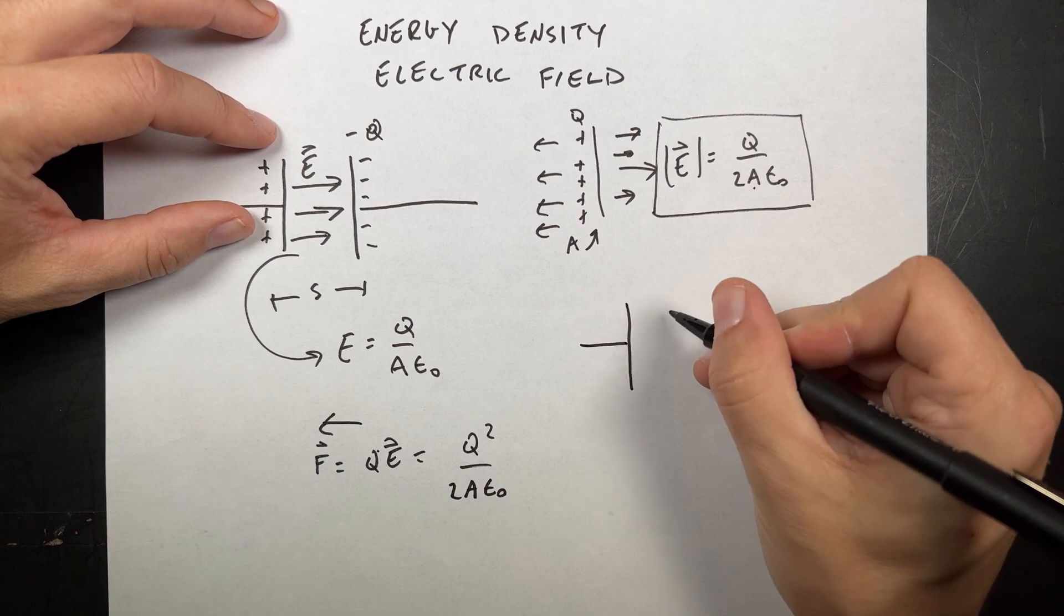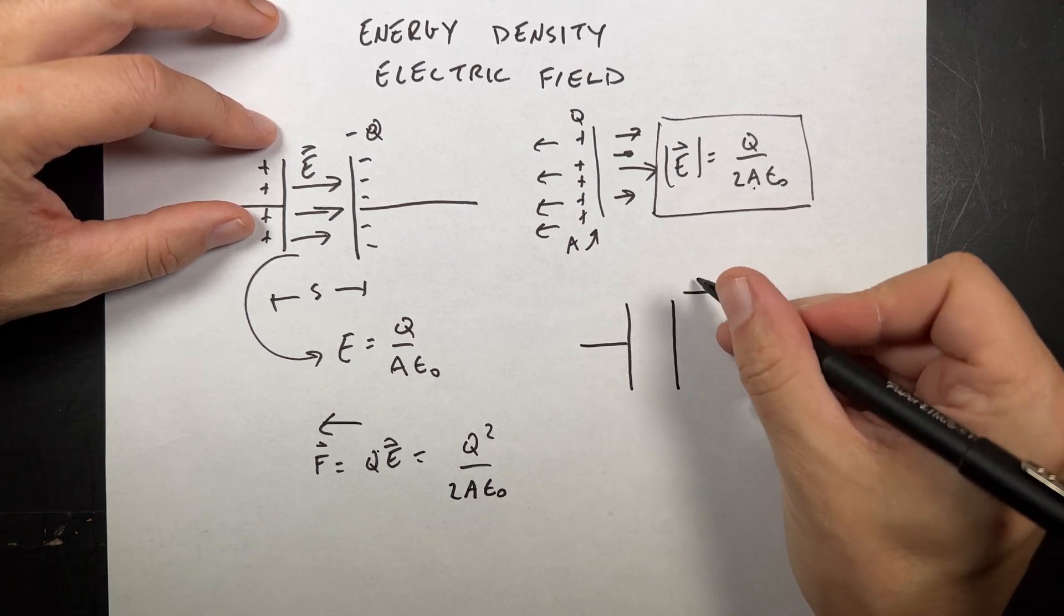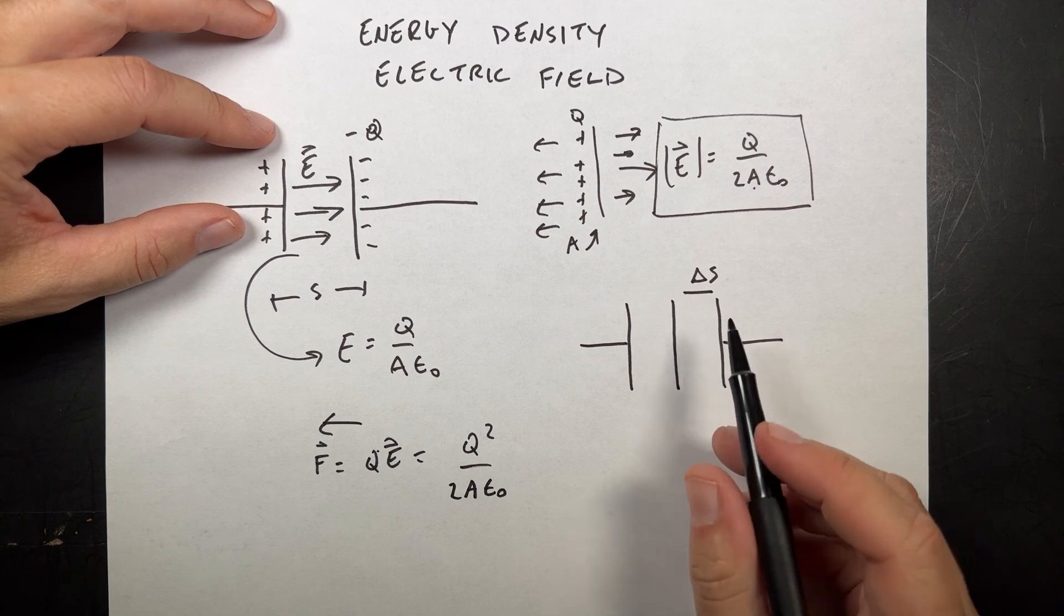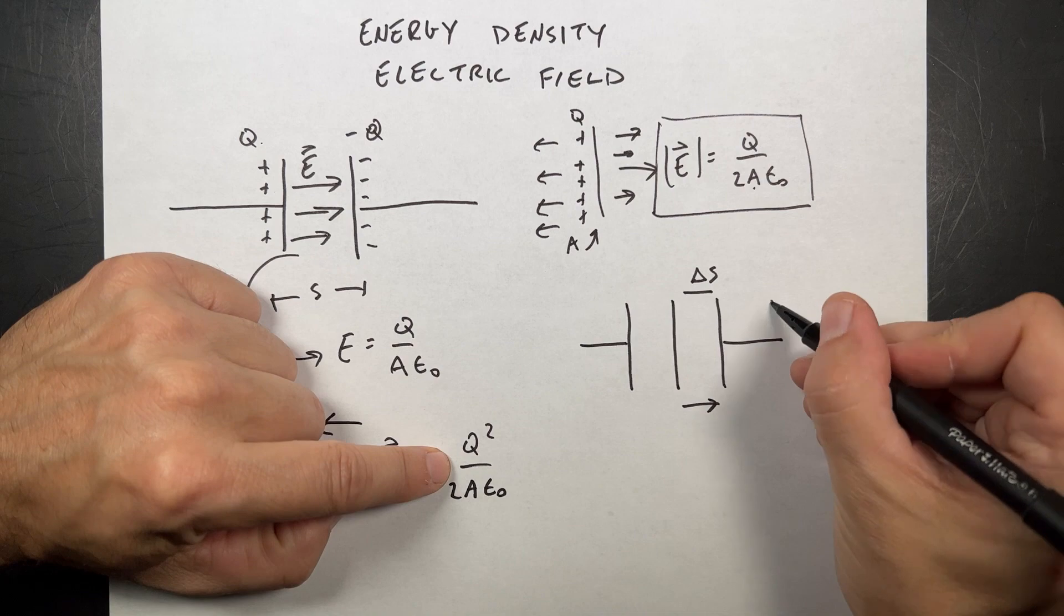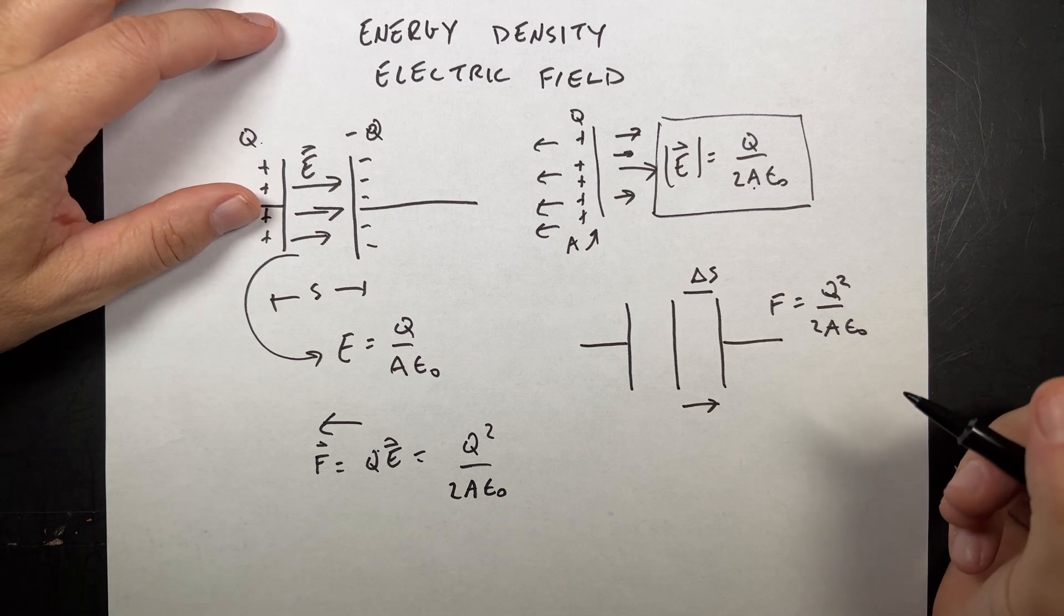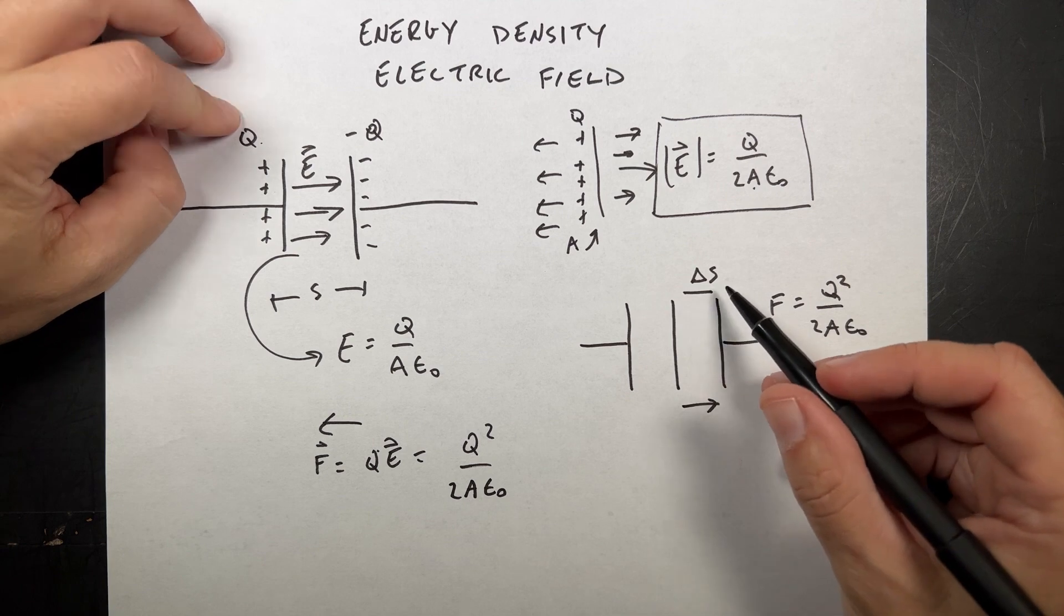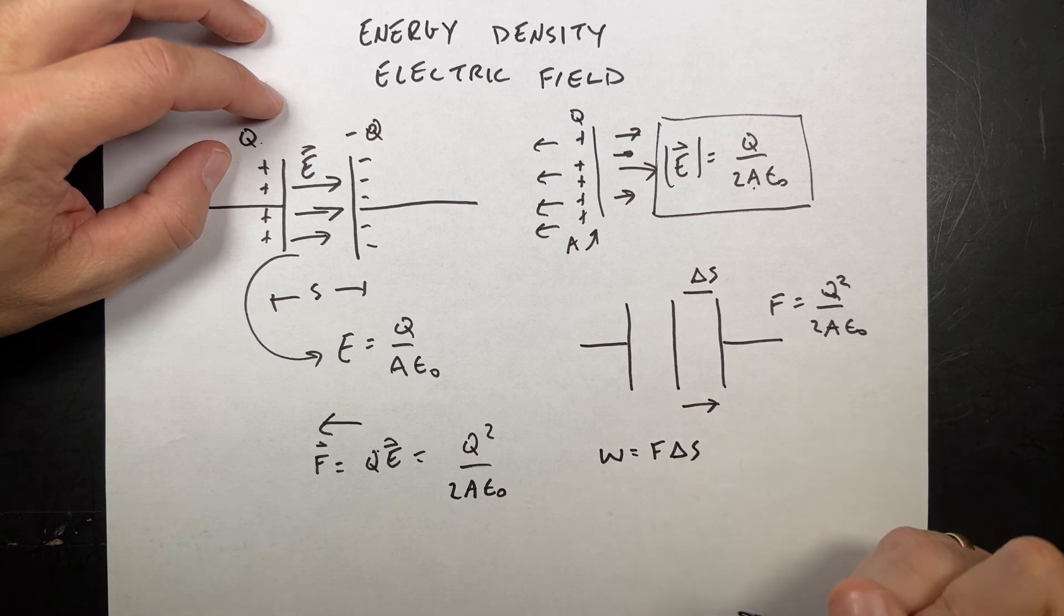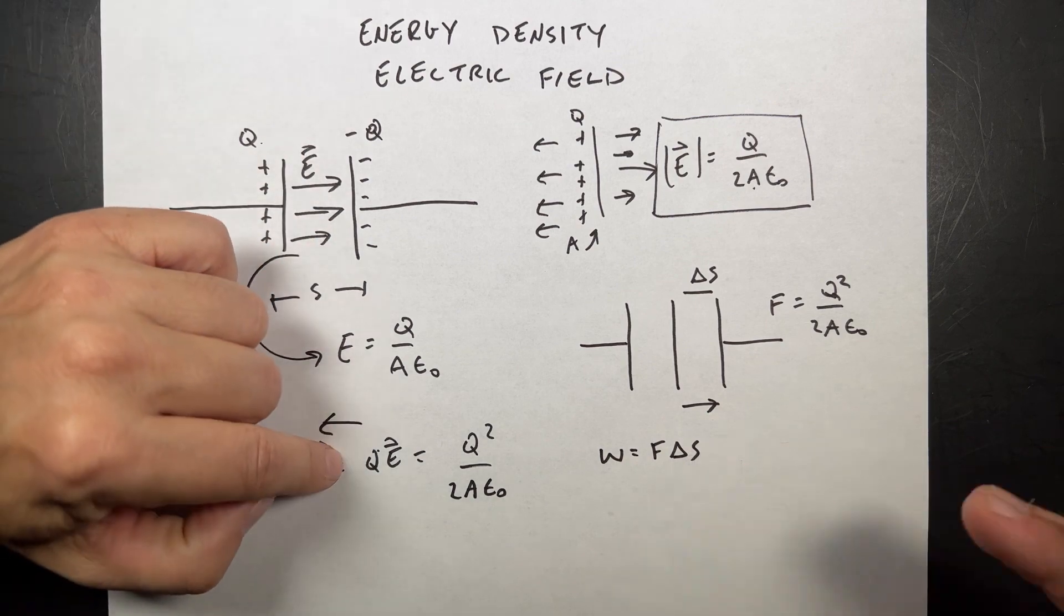Now let's suppose that I take that plate and I pull it back at a constant speed, a distance delta S. So I pull it over here. It's a very tiny distance. So I'm going from here to there. Well, what force would that require? I'd have to pull on that with F equals Q squared over 2A epsilon naught. That's how hard I'd have to pull it. If I pull it with a force F over some displacement delta S, then I have work as F delta S. There would be work done.